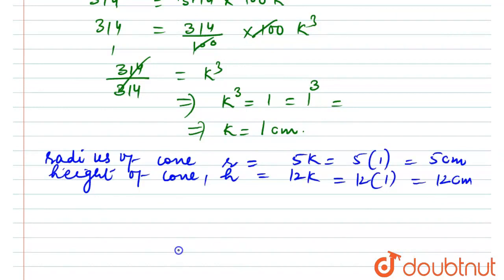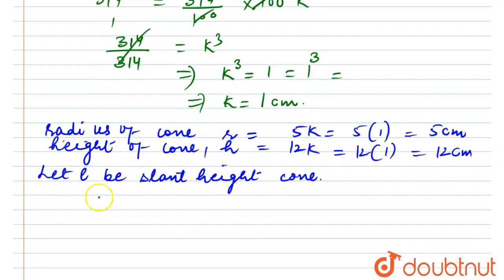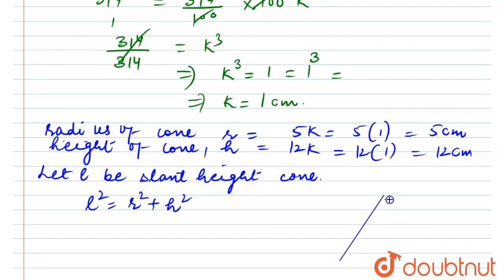Now we need to find the radius and the slant height of the cone. Let l be the slant height of the cone. The formula for slant height, by the Pythagorean theorem, is: l² = r² + h². Let's draw the right circular cone to visualize this.